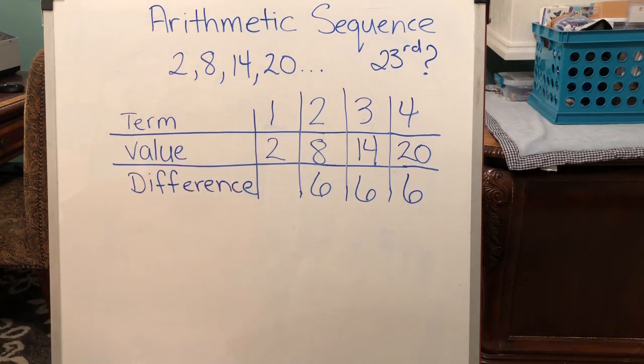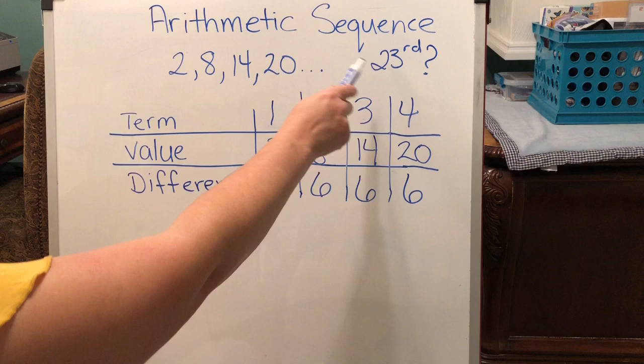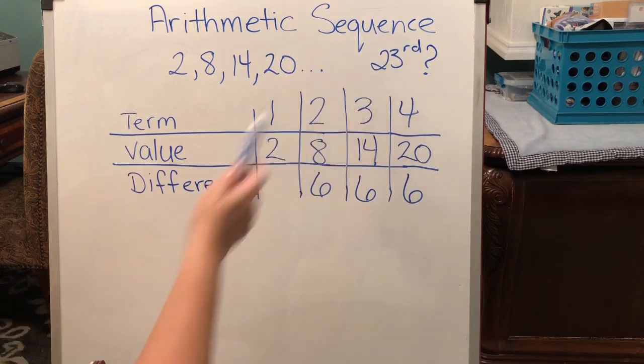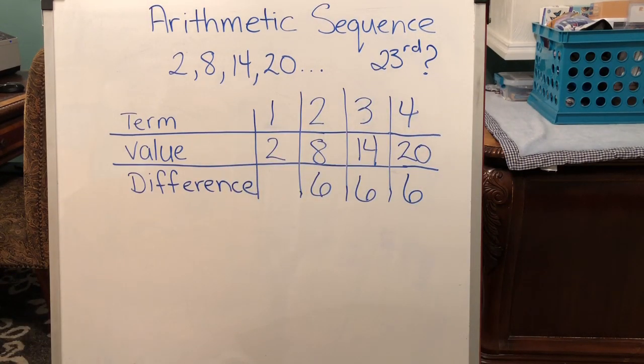And we call that the common difference. We want to figure out how to create an equation that is going to tell us a sequence way far out. Here we've picked the 23rd sequence and we don't want to list each one. So we want to develop an equation where we can go ahead and solve that and find any term that we want in the sequence.